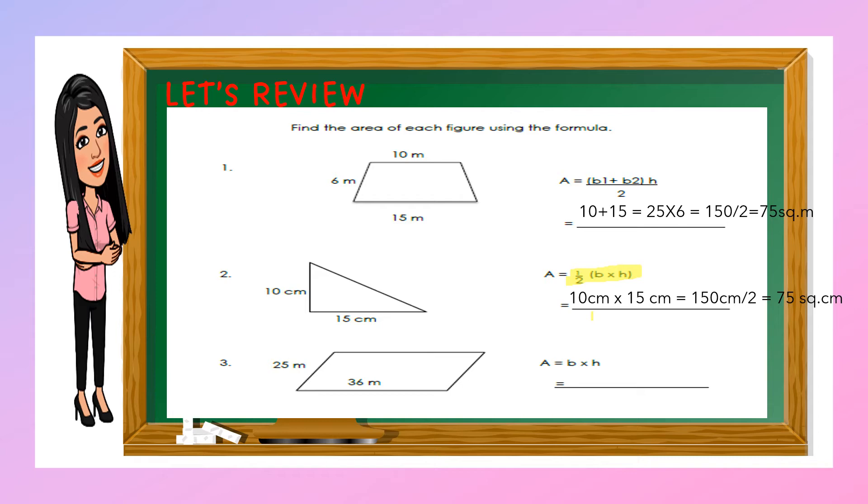So the area of the triangle is 75 square centimeters. The third one is we have parallelogram. The formula is A equals b times height. So we have 25 meters times 36 meters is equal to 900 square centimeters.